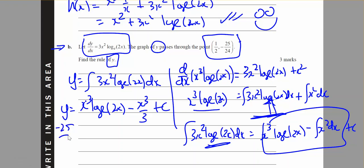And I know that it's equal to minus 25 over 24 will equal 1 over 2 cubed log base e of 1, minus 1 over 2 cubed times 1 third plus c.